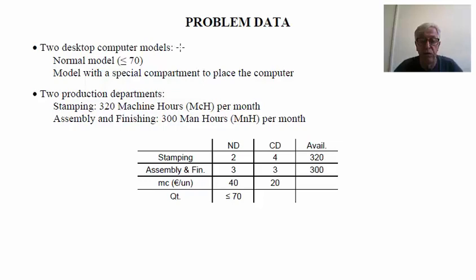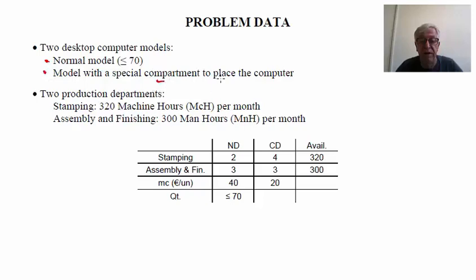We want to produce computer desks, and we have two models. A normal model, for which we have a market limitation — there is no demand for more than 70 desks a month — and a model with a special compartment to place the computer. To produce these desks, we need to use two production departments: the stamping department, with 320 machine hours per month, and the assembly and finishing department, with 300 man hours per month.